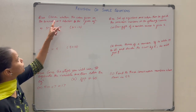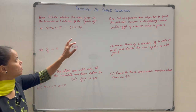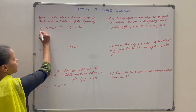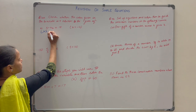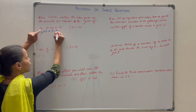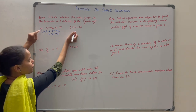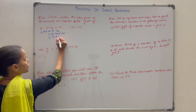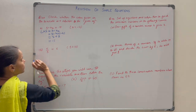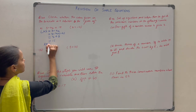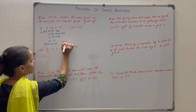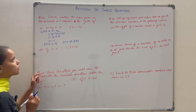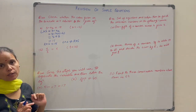Check whether the values given in the brackets is a solution to the given equation. Let us put the value of the variable on the left hand side. The LHS expression is 3 minus 4x. With x equals minus 2: 3 minus 4 into minus 2. Minus into minus is plus, so 4 times 2 is 8, and 8 plus 3 is 11. The RHS equals 15. Since LHS is not equal to RHS, x equals minus 2 is not the solution of this equation.